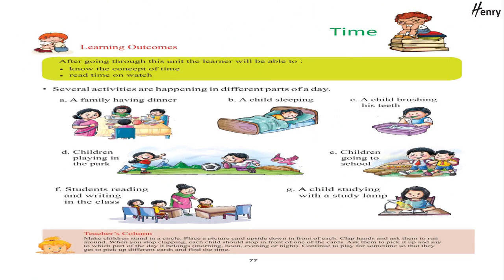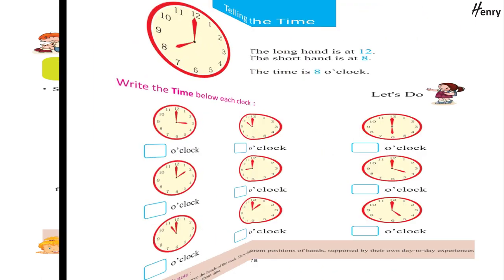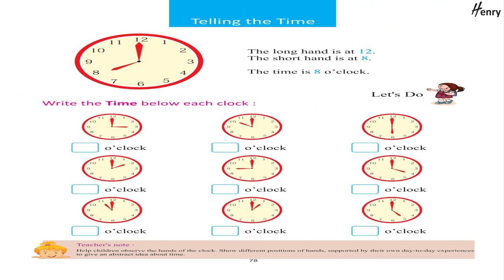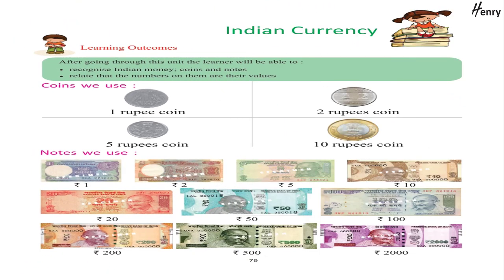Time — Learning Outcomes: After going through this unit, the learner will be able to know the concept of time, read time on a watch. Several activities happen in different parts of the day. Telling the time: the long hand is at 12, the short hand is at 8 — the time is 8 o'clock. Let's do — write the time below each clock.